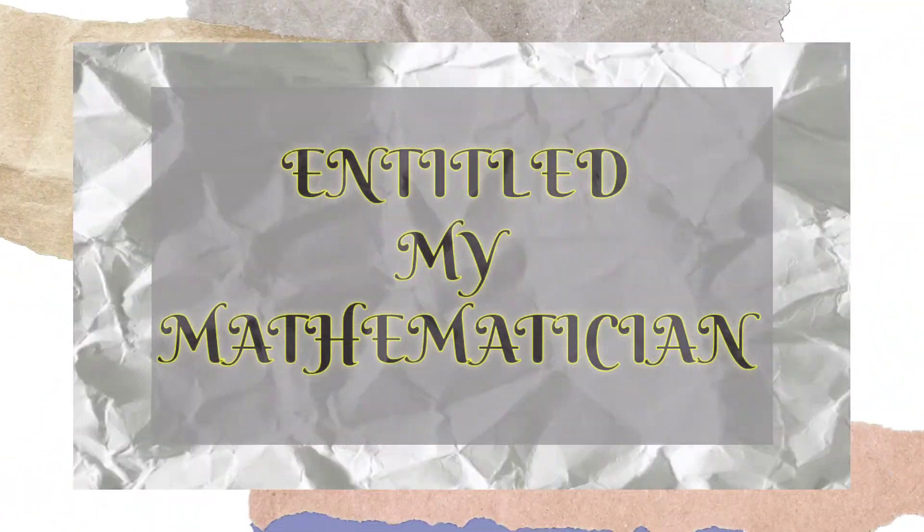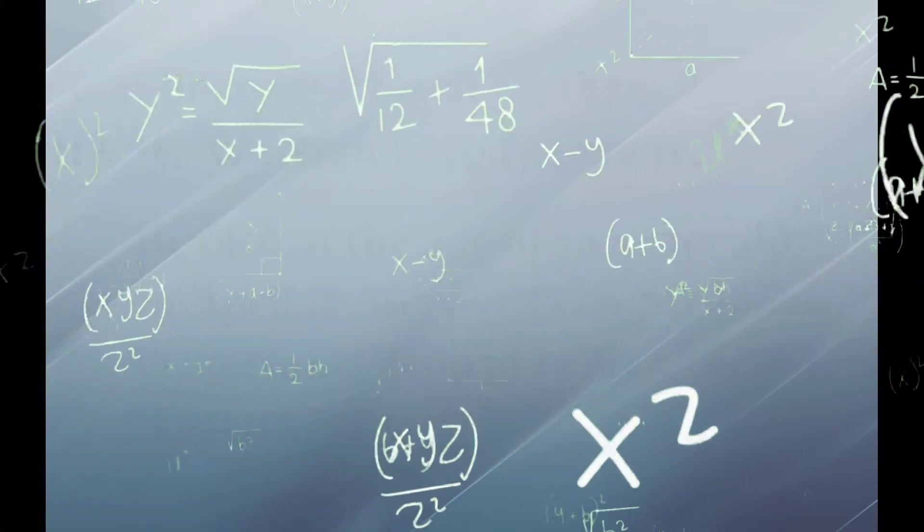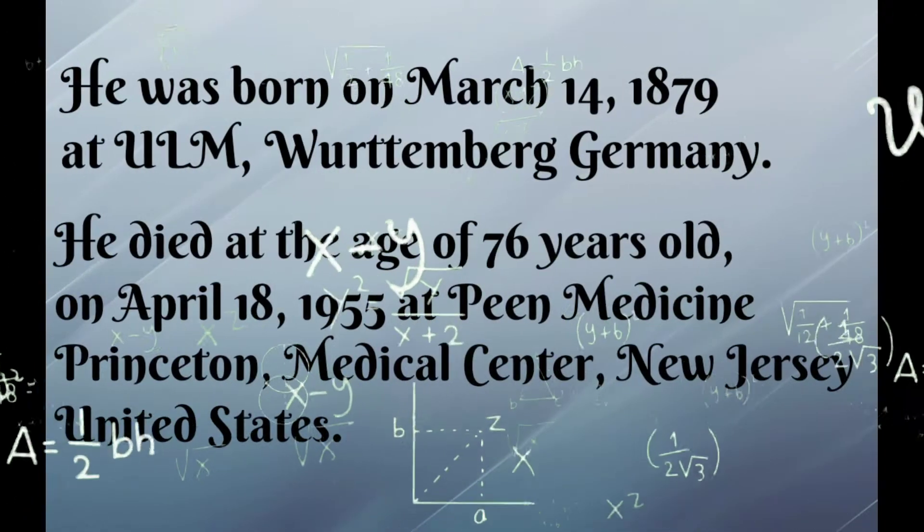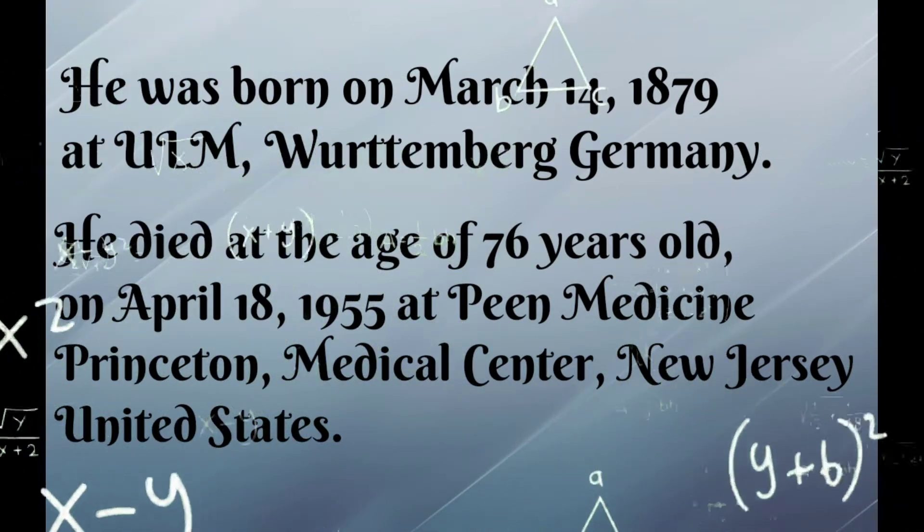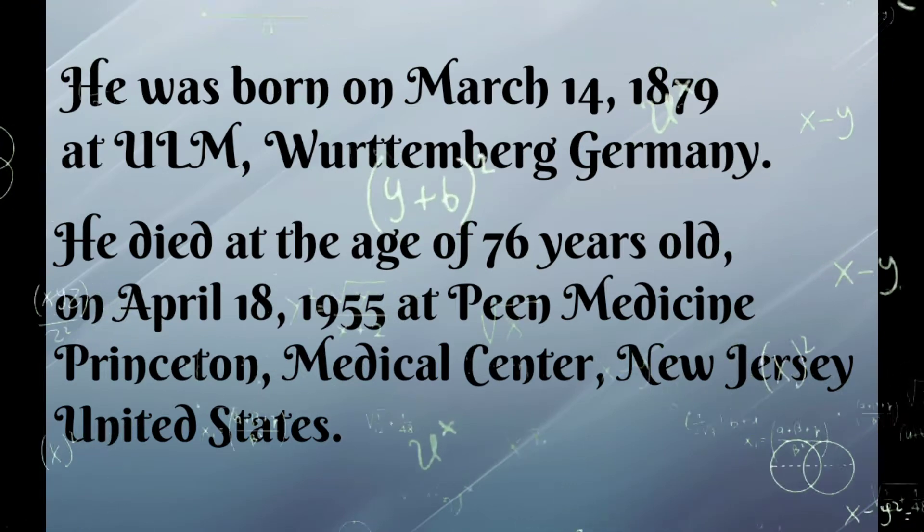Entitled My Mathematician: Albert Einstein. He was born on March 14, 1879 at ULM, Wurttemberg, Germany.